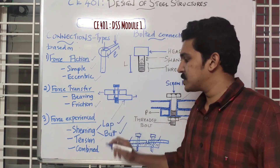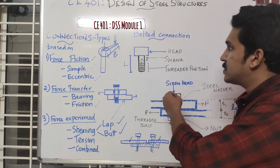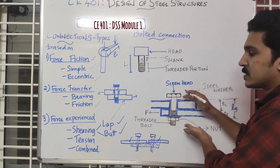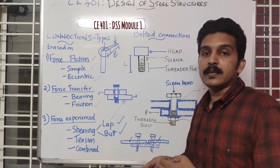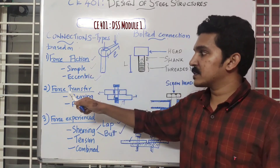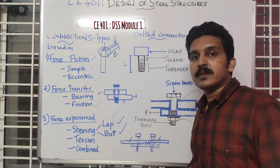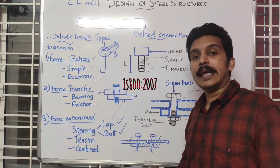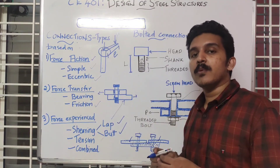This concludes the second lecture on connections. We summarized the parts of a bolt, how a bolt is designated, the grade and strength of a bolt, and the various types of connections based on force action, force transfer, and force experience. In the next class, we will discuss different types of bolts and the code provisions — specifically IS 800-2007 — for bolted connections.